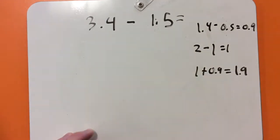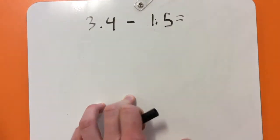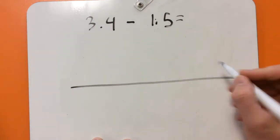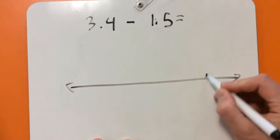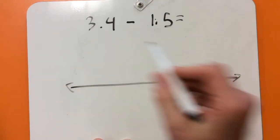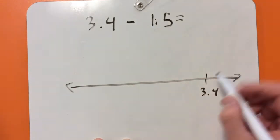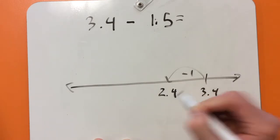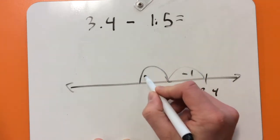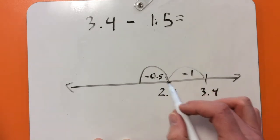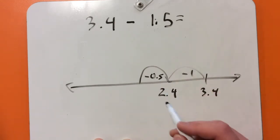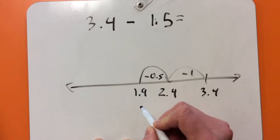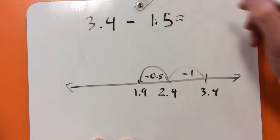The second way I'm going to show you is with a number line. So on our number line, we've got 3.4. So I'm going to take away first one, so that gives me 2.4. And then I'm going to take away 0.5. So that's 5 tenths from 2.4, which is 24 tenths, so that gives me 1.9.